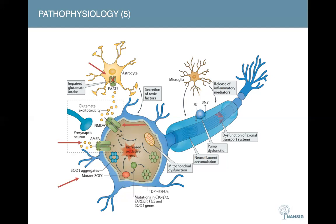Superoxide dismutase 1, the SOD1 gene — its mutations are also associated with glutamate excitotoxicity. It also increases oxidative stress, induces mitochondrial dysfunction, causes formation of intracellular SOD1 aggregates, and adversely affects neurofilament and axonal transport. By contrast, mutations in C9ORF72, the TARDBP proteins, and the FUS genes are associated with dysregulation of RNA metabolism and formation of toxic intracellular aggregates. Activation of microglia results in secretion of pro-inflammatory cytokines, hence producing further toxicity within the neurons.